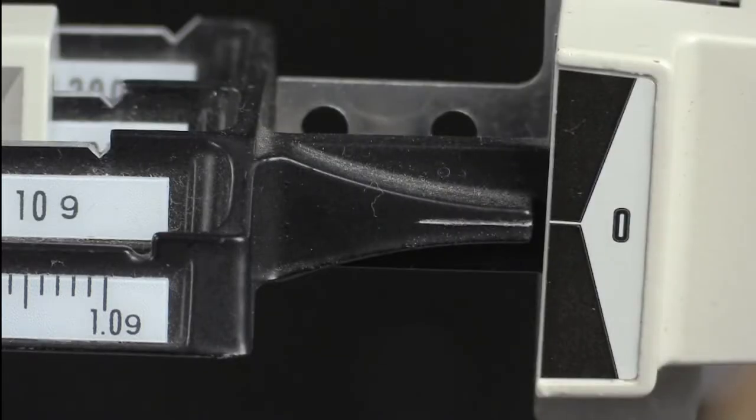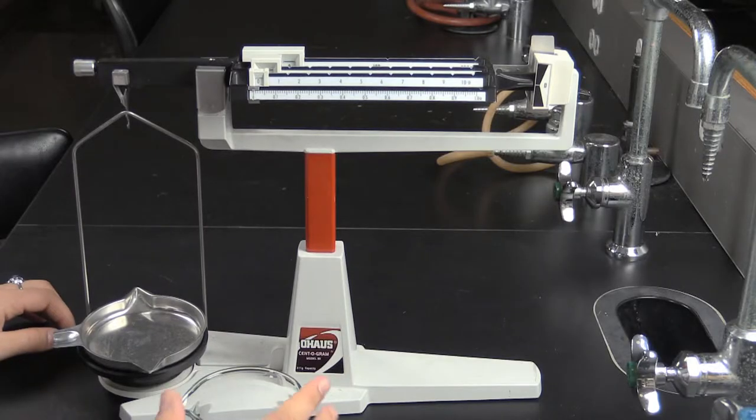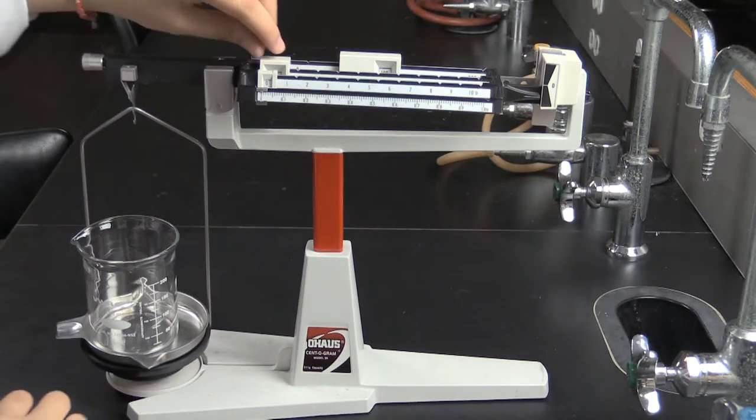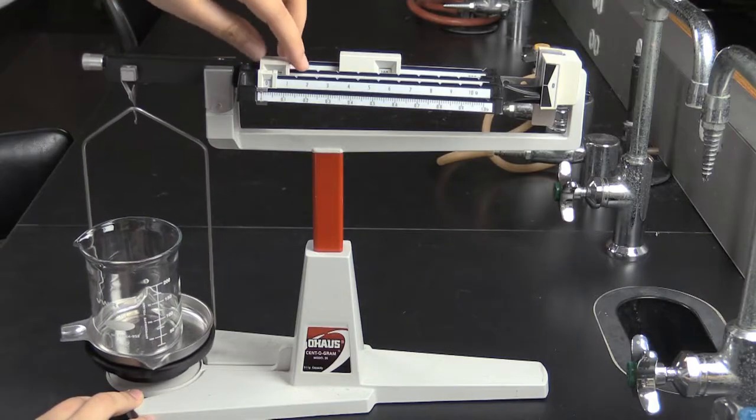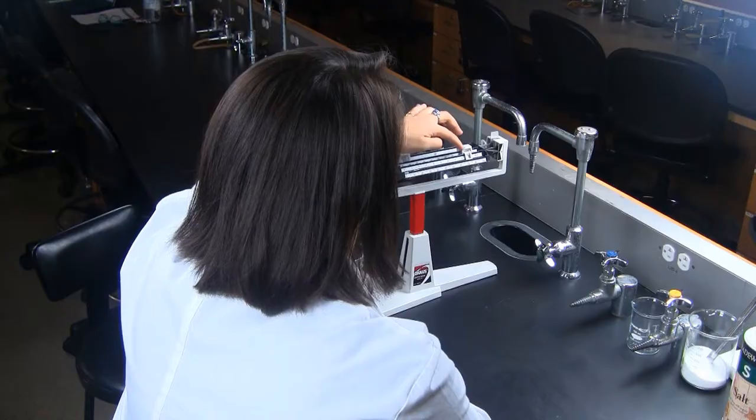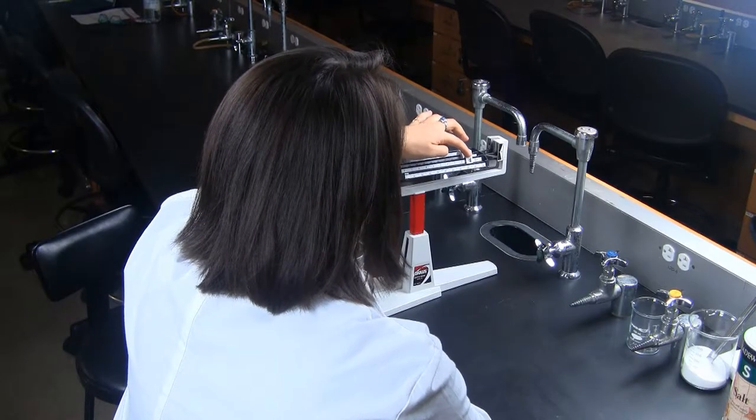Once the balance is zeroed, you are ready to take a measurement. Ileana is going to measure the mass of a beaker. When she places the beaker on the balance pan, it will go out of balance.